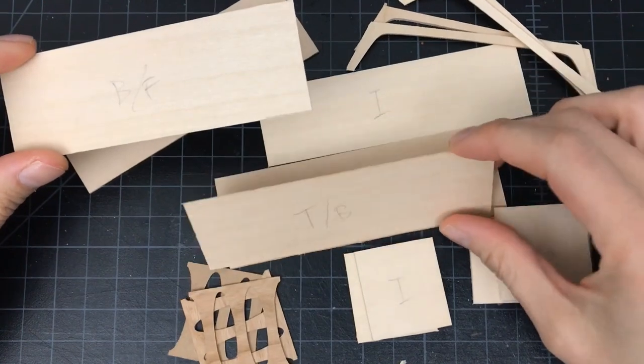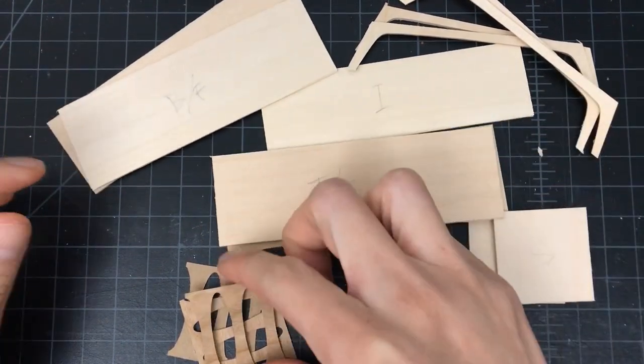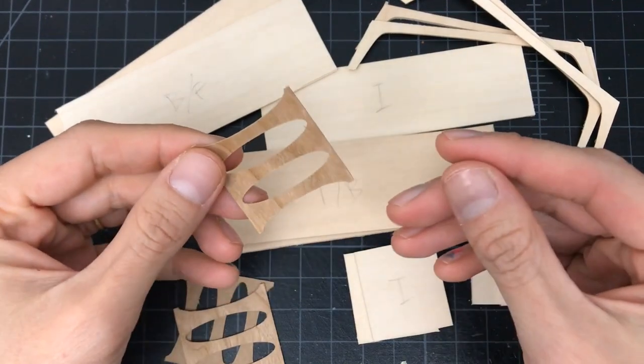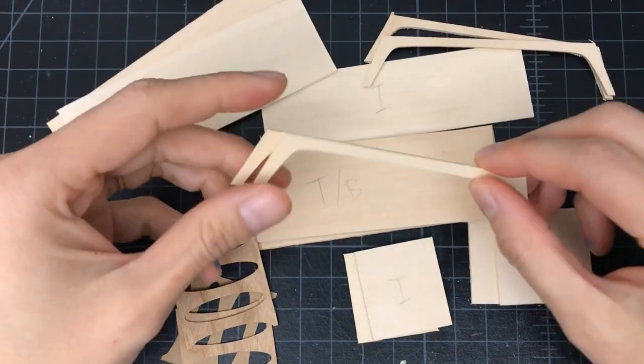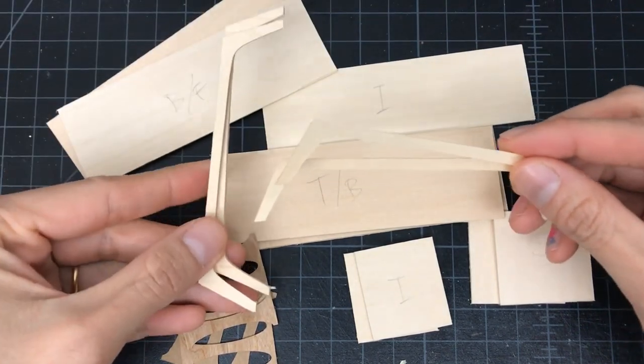I use a Cricut Maker to cut the pieces out of basswood. For the decorative panels I use wood cardstock. The legs are also basswood and I cut two along the grain and two across the grain.